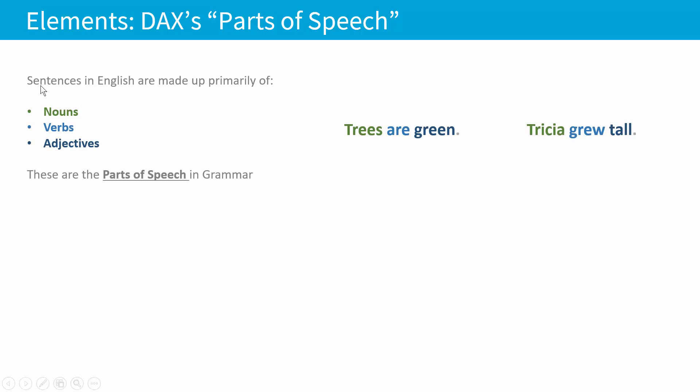All right, enough to talk about that. What do I mean by these elements? Well, okay. So let's start by thinking about sentences in English. So if you think of sentences in English, they're made up primarily of nouns, verbs, and adjectives. These are the parts of speech in grammar. So in the same way that I've got two sentences here, trees are green and Tricia grew tall, even though these are different sentences, they're composed of these same parts of speech. We've got nouns, we've got verbs, and we've got adjectives. And even though trees and Tricia, those are two different things, they're not literally the same thing, they're both nouns. They both do the same job in the sentence. They refer to the person, place, or thing.